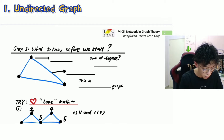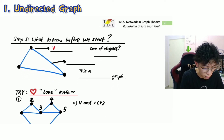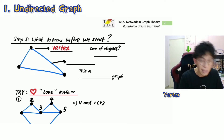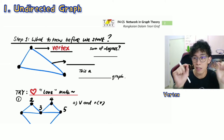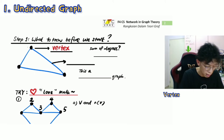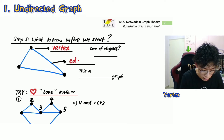First of all, you see a very big dot there — that's called the vertex. And this line over here, where it connects between two vertices — vertex one and vertex two — the line in the middle, we name it as the edge.